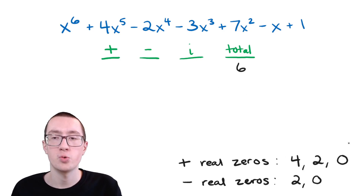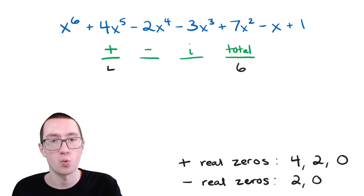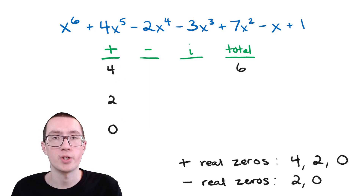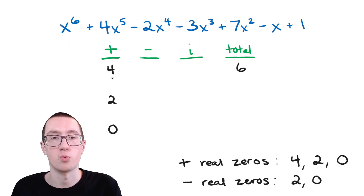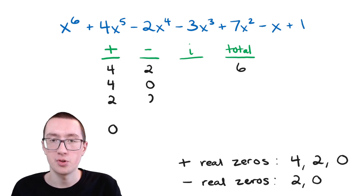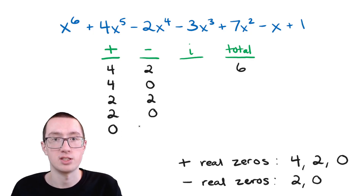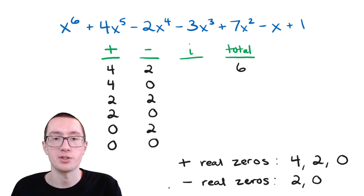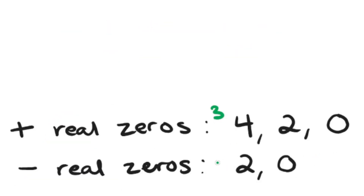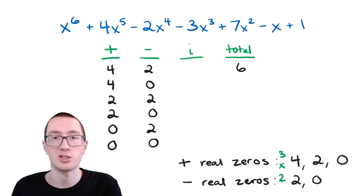We're going to have columns for positive answers, negative answers, imaginary answers, and totals. For every possibility, the total will always be six. We can have four, two, or zero positive zeros, and for each of those we can have two or zero negative zeros. So our rows are: four and two, four and zero, two and two, two and zero, zero and two, and zero and zero. You can check this: three positive possibilities times two negative possibilities equals six rows total.